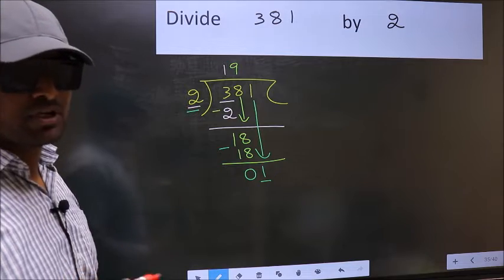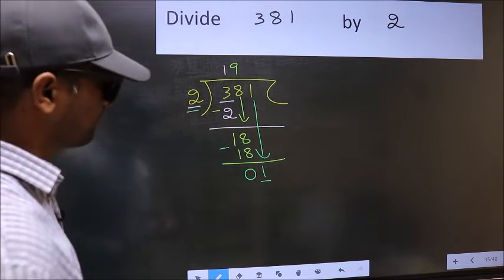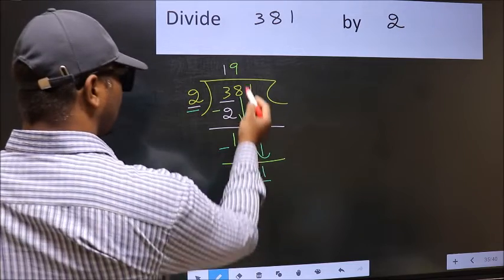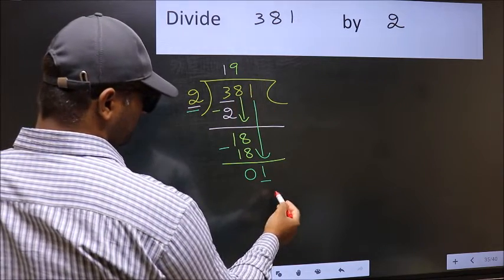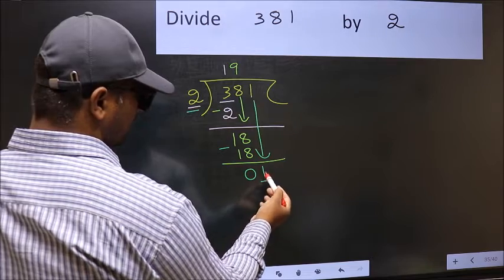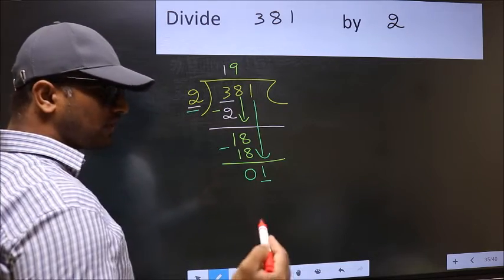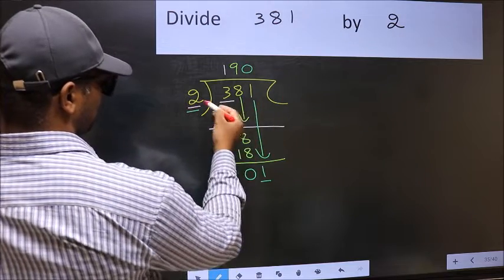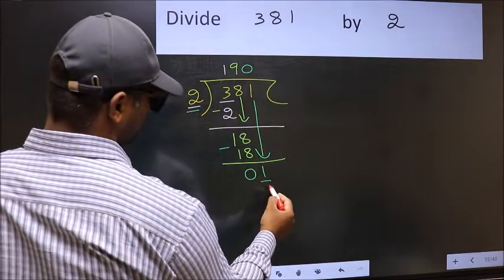Instead, what you should think of is, what number should we write here. If I take 1, I get 2. But 2 is larger than 1. So, what we do is, we take 0 here. So, 2 into 0, 0.